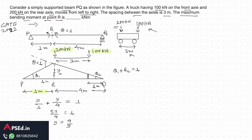Once we know y = 4/5, we find the ordinate y' at the location 1 meter from support Q (where the 100 kN load sits in the second configuration). Using similar triangles: y/4 = y'/1, so y' = (4/5)/4 = 1/5.